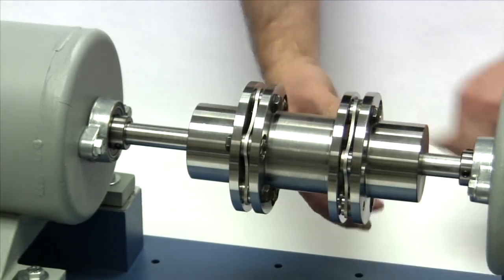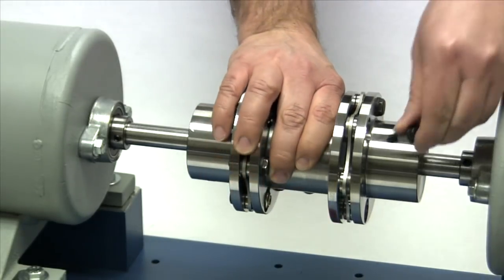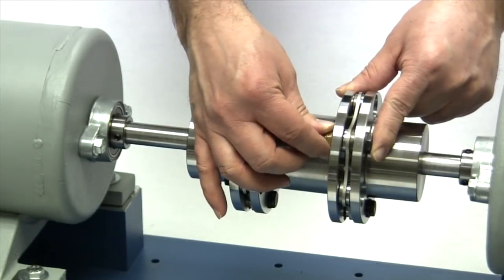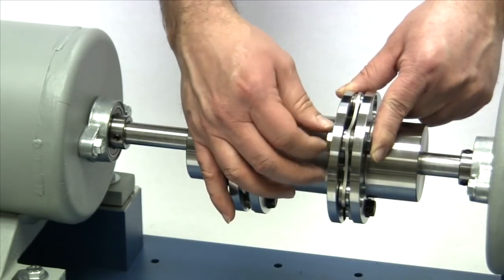When we tighten the bolts and the lock nuts, we will tighten all the lock nuts on one side of each disc pack, then the second side. Do this on one end of the coupling, then repeat on the other end.